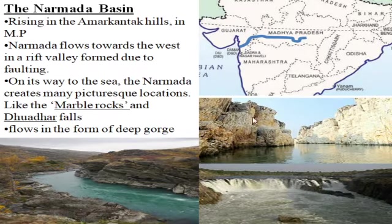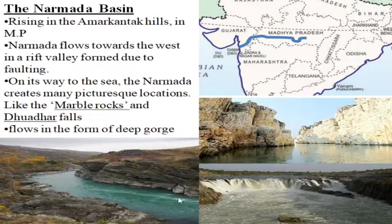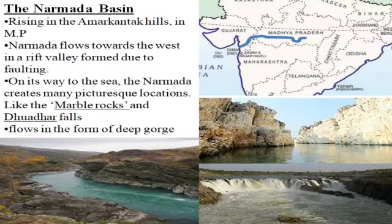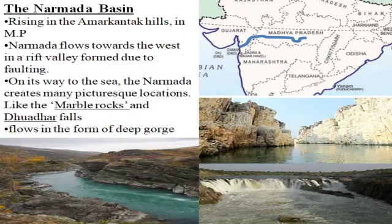Narmada is one of the longest rivers among east-west flowing rivers. It flows in the form of a deep gorge and is known as the lifeline of Madhya Pradesh. Its tributaries are the Hiran, Tawar, and Kolar rivers. Famous projects on it include Sardar Sarovar Dam, Maheshwar Dam, and Indira Gandhi Sagar Dam. Sardar Sarovar Dam is located in Gujarat.